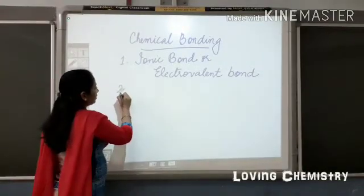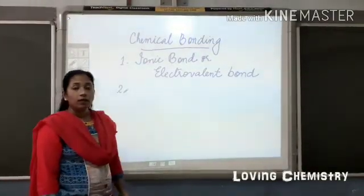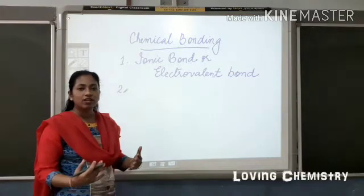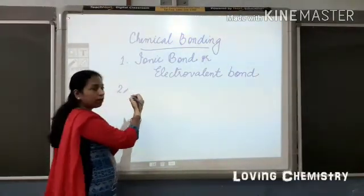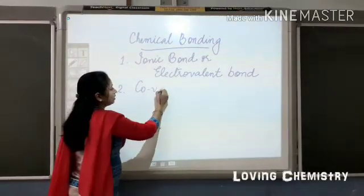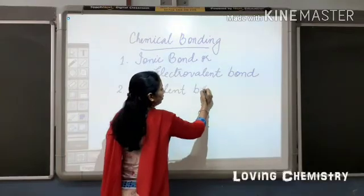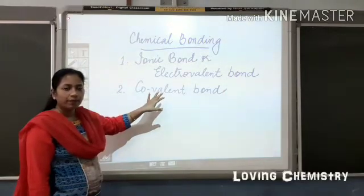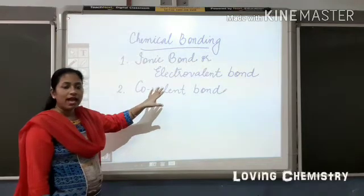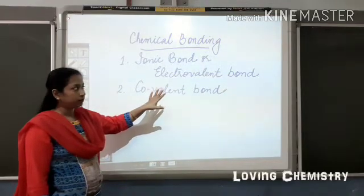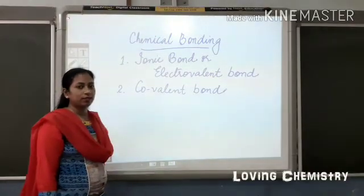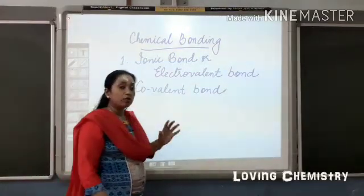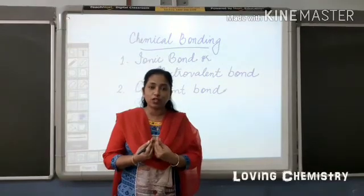Another way of attaining stability is mutual sharing of electrons between the two atoms which are combined. And the bond thus formed is called covalent bond. These two bonds you have already studied the formation with examples, the conditions and properties last year.